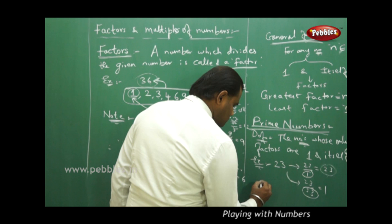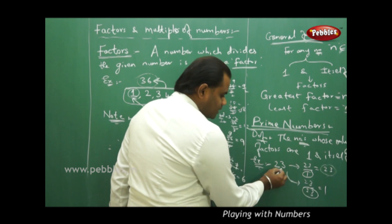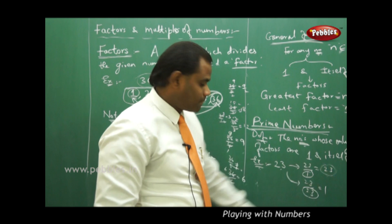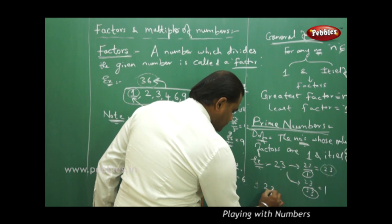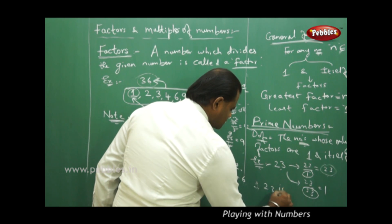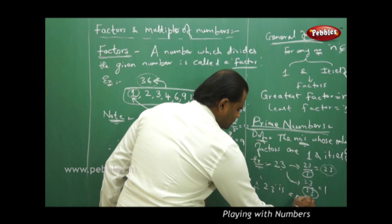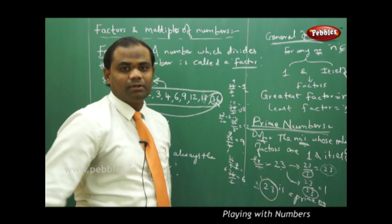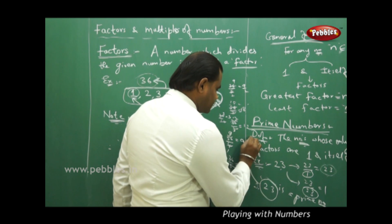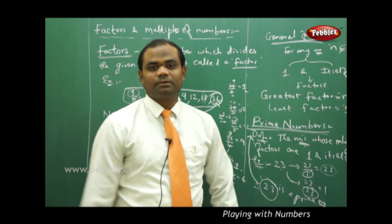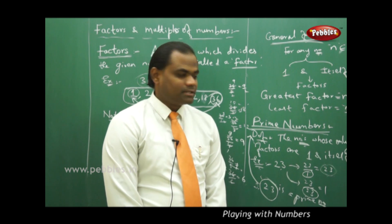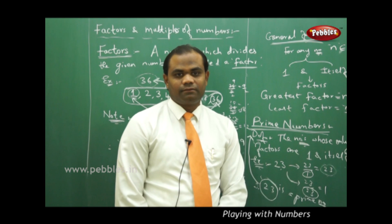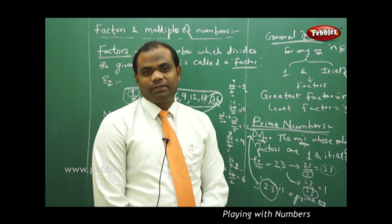Since 23 has only 1 and itself as factors, 23 is a prime number. This is a prime number by the basic definition, where a prime number is defined as that number whose only factors are 1 and itself, with 23 being one of the examples.